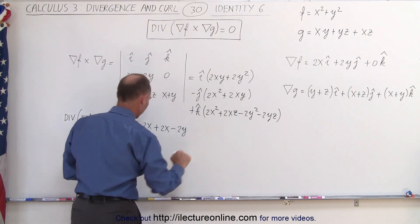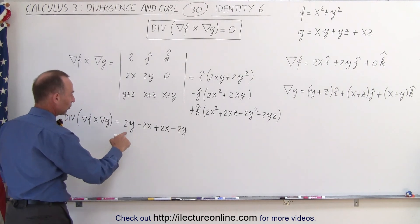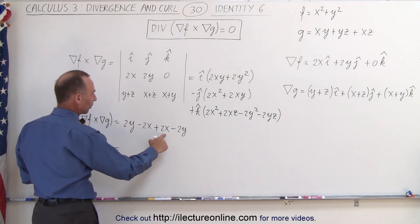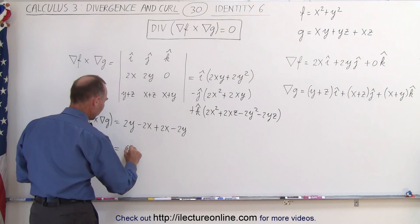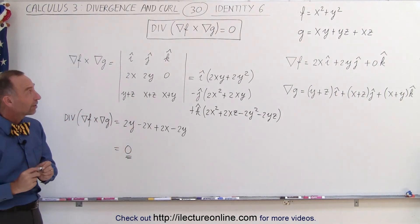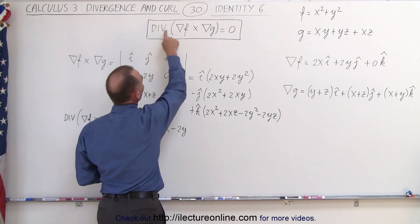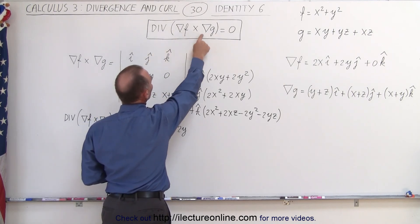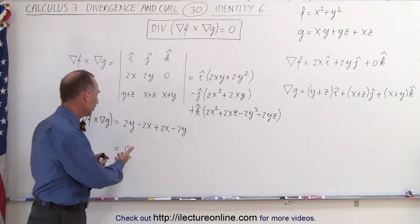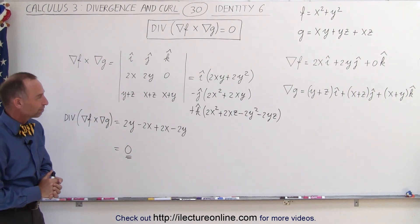Combining like terms: 2y minus 2y equals zero, and 2x minus 2x equals zero. So this ends up being equal to zero, just as was predicted by the identity. When we take the divergence of the cross product of the gradients of two scalar functions, we should always get zero, as we did in this example.